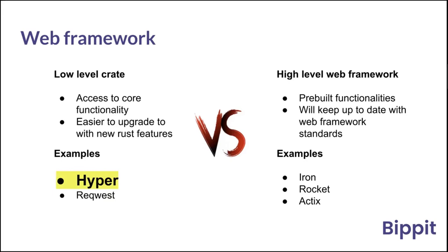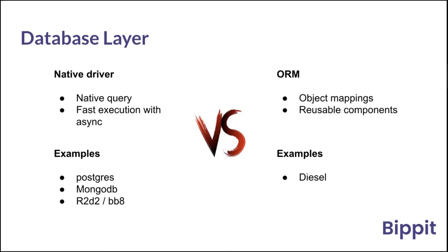The number one reason for choosing Hyper was async/await. When we started out, async/await wasn't in stable Rust, and we wanted to get there as soon as possible because we knew how important it was. Writing code without it was just so difficult to read, and even for new engineers joining the project it was hard to understand. As it turned out, Hyper was upgraded with async/await about four months before the web frameworks were.